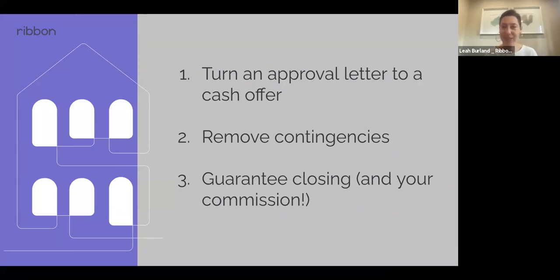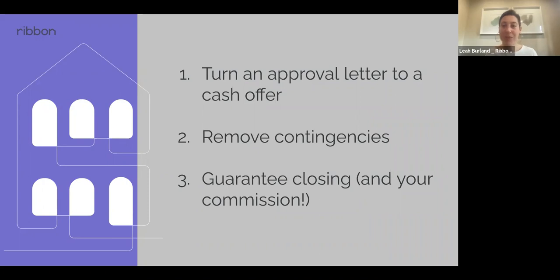We're helping buyers be more competitive by turning their offer to cash, removing contingencies, and guaranteeing the closing. We do this through an addendum — it's a two-page addendum written in plain language that a seller or listing agent can easily read and understand. It tells the seller: if this buyer's financing falls through for any reason, Ribbon will step in and purchase the home on the buyer's behalf, removing that financing contingency.